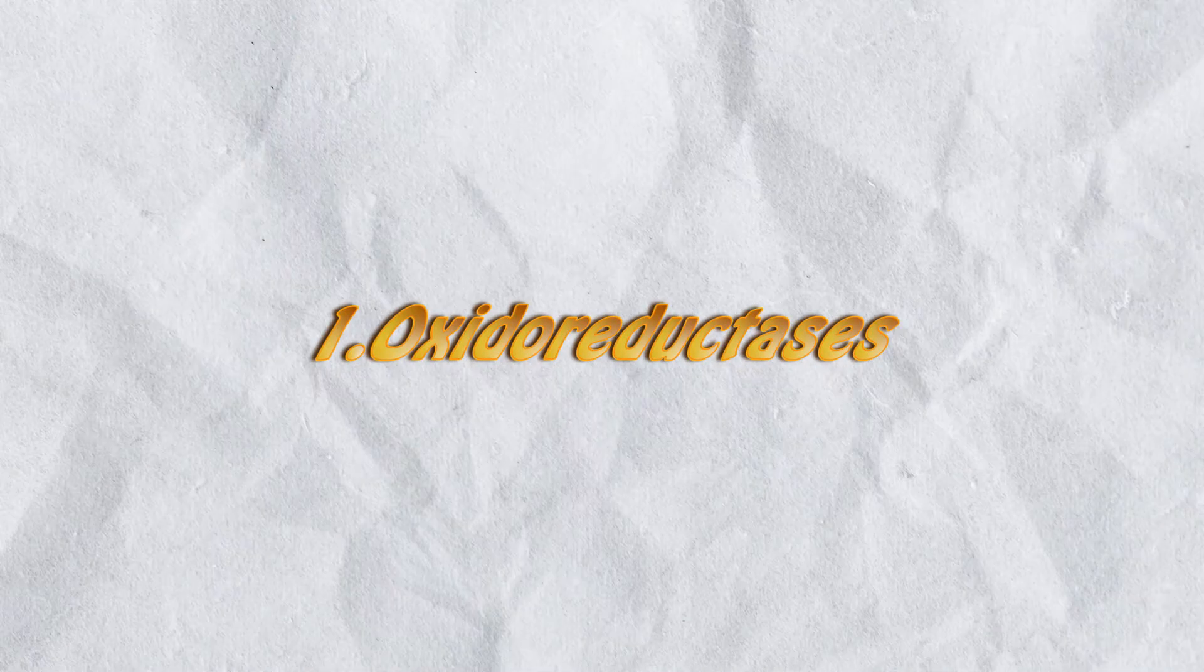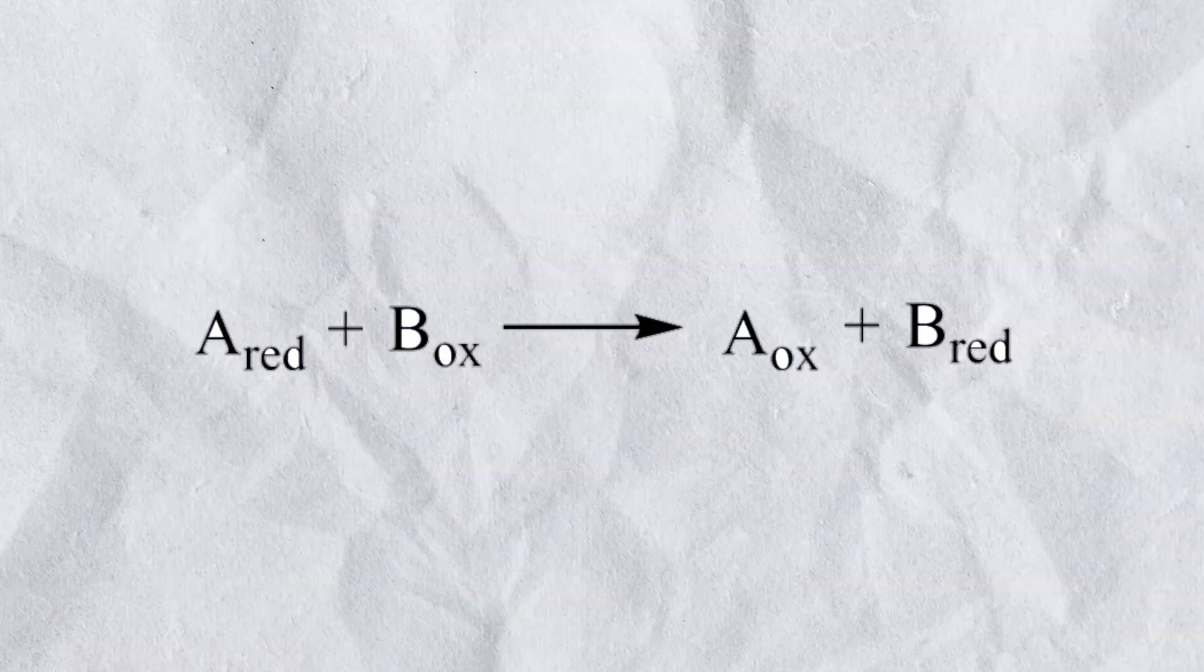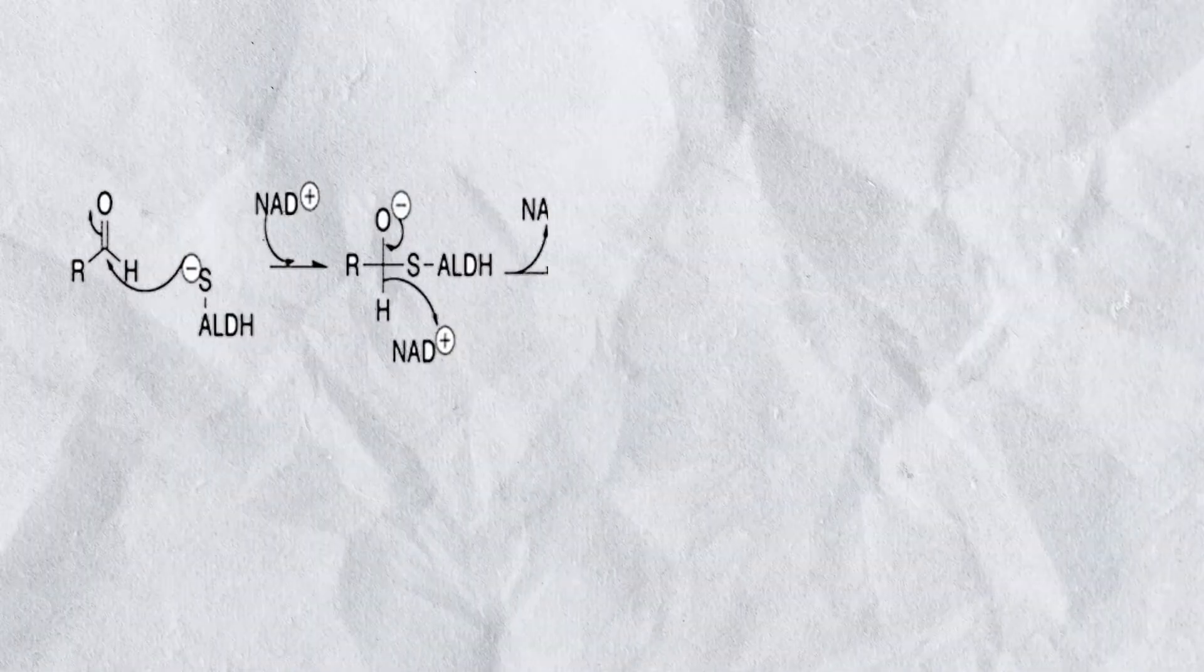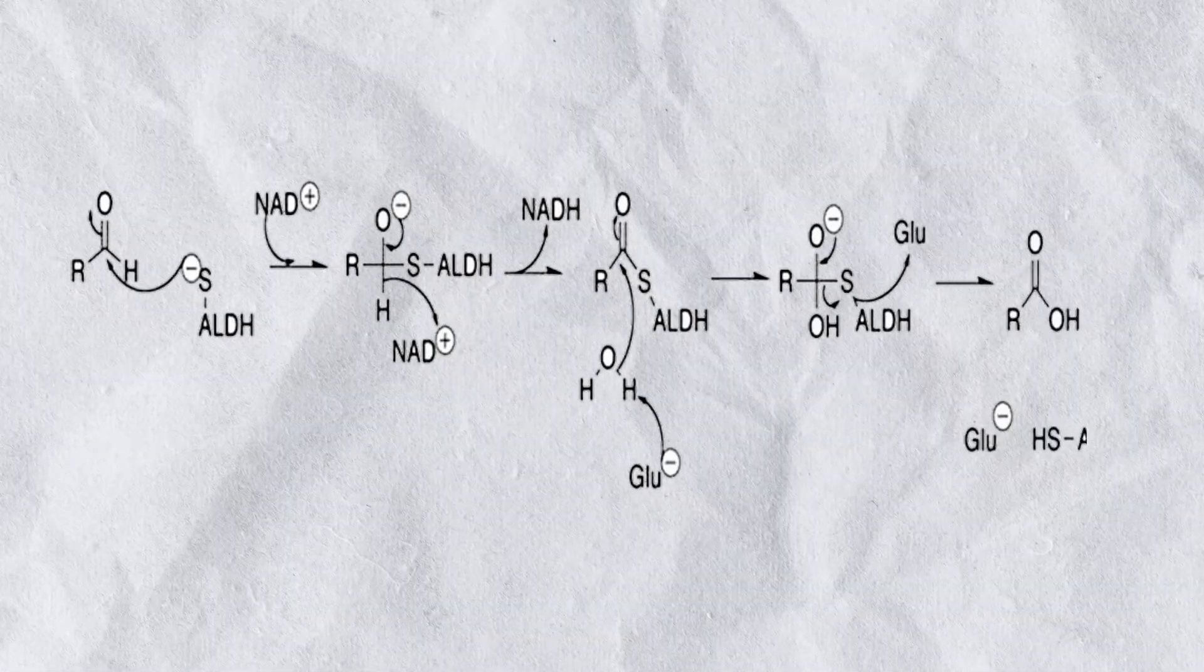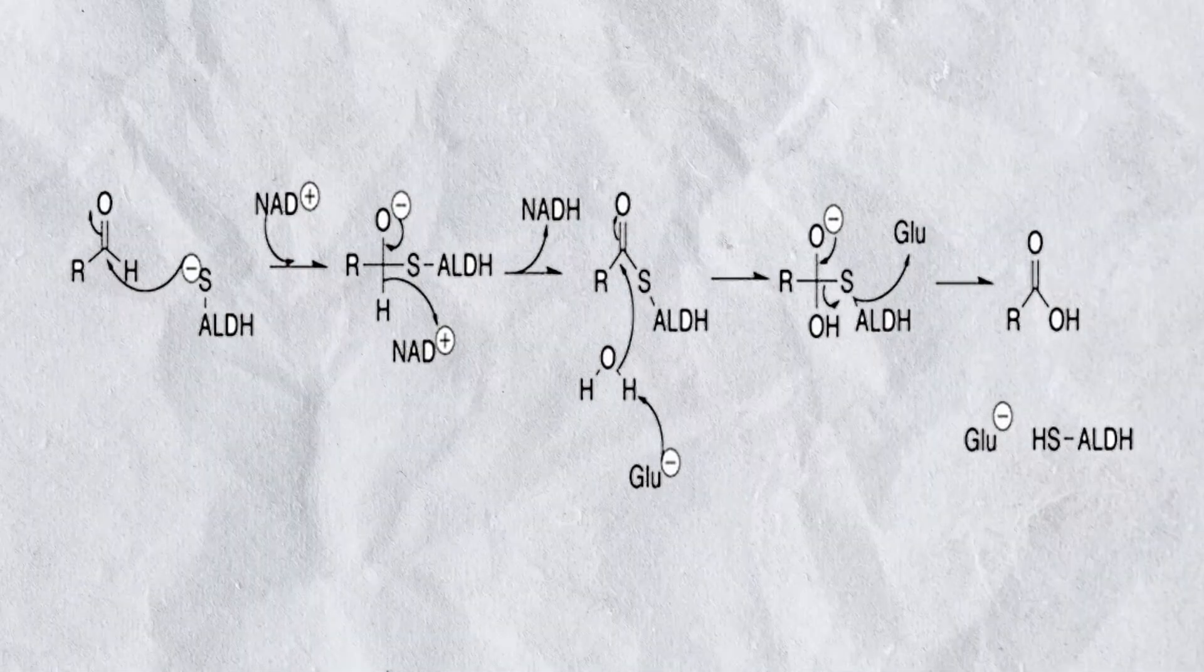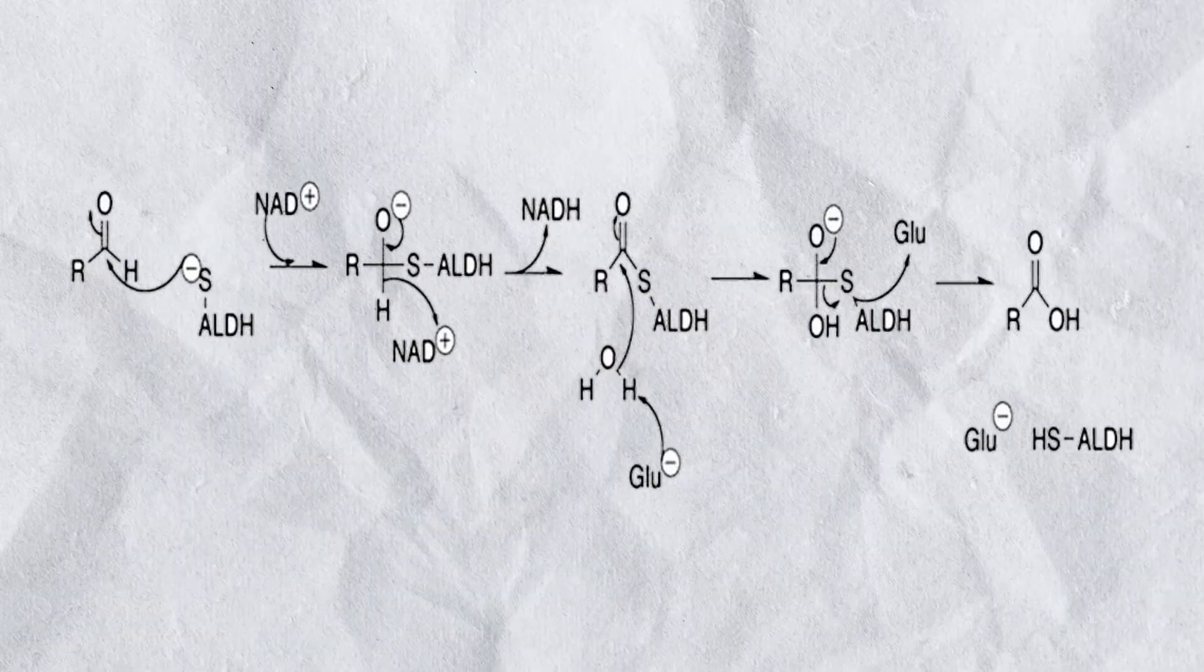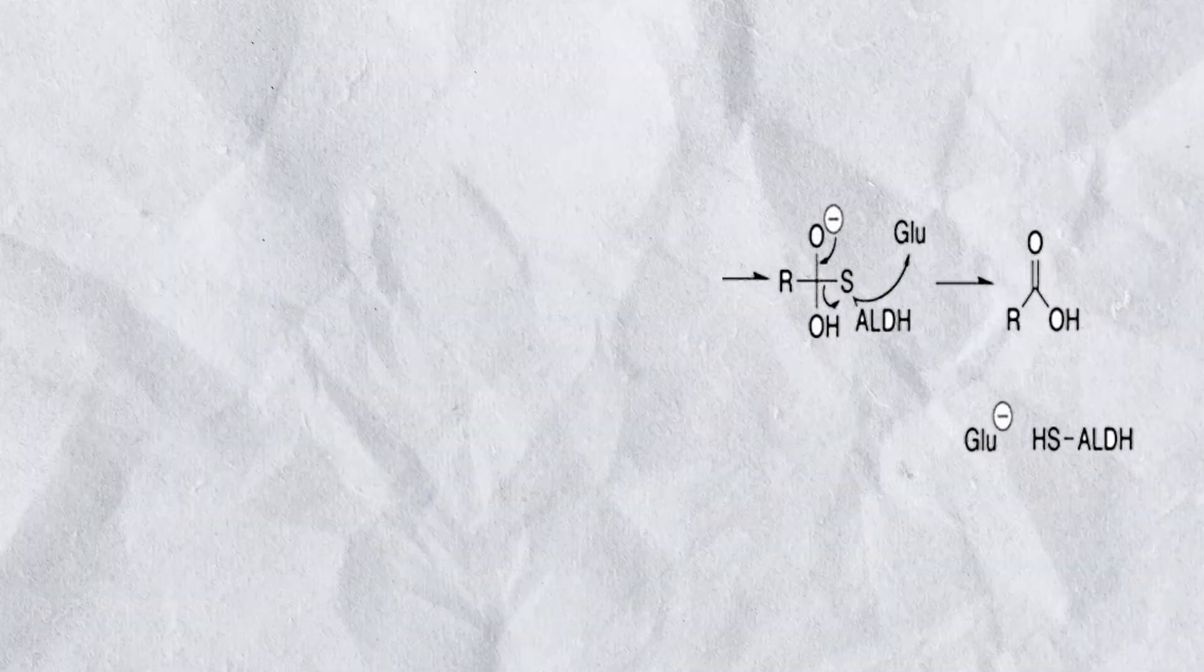Type number one: Oxidoreductases. Enhance the rate of oxidation and reduction reactions. In these reactions, also called redox reactions, one of the reactants gives up a pair of electrons that another reactant gains. The electron pair donor is said to be oxidized and acts as a reducing agent. The electron pair gainer is reduced and is called the oxidizing agent.